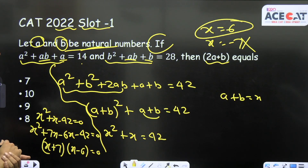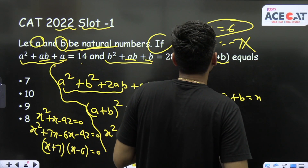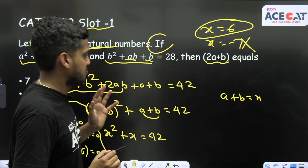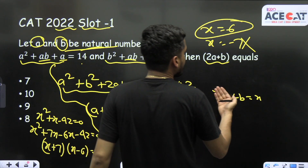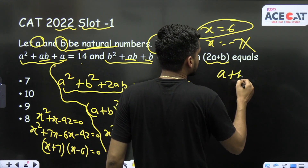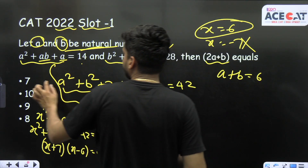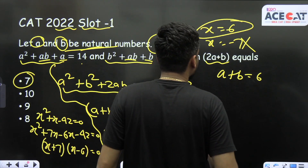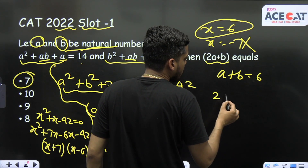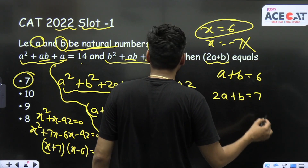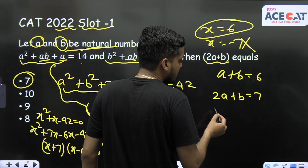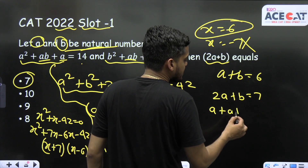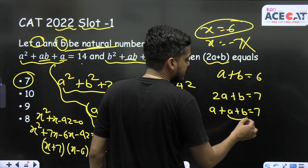The question asks for 2a + b, not a + b. We have a + b = 6. Let's check option A: if 2a + b = 7, then splitting it as a + (a + b) = 7, and since a + b = 6, we get a = 1.